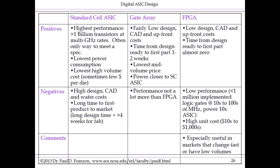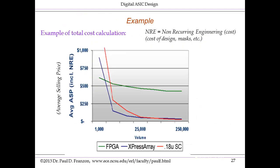Performance levels for gate arrays tend to be quite modest — a side effect of the fact that most gate array technologies are done in older semiconductor nodes. Here's an example plotting the average selling price of a chip implemented in these three different styles against the production volume of that chip.